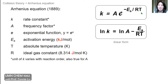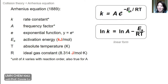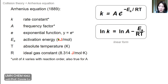The Arrhenius equation is provided in exponential form and also in linear form, obtained by taking the natural log of both sides. K is the rate constant, A is the frequency factor (capturing orientation and collision frequency), Ea is the activation energy (typically in kilojoules per mole), R is the ideal gas constant (joules per mole·kelvin), and T is temperature in absolute Kelvin. Because Ea is in kilojoules and R is in joules, you often need to convert Ea to joules for the equation to work properly.